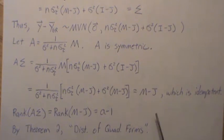But M - J is idempotent. It's a perpendicular projection matrix. So this A times sigma is idempotent. So the rank of A sigma is the rank of M - J, which is A - 1.